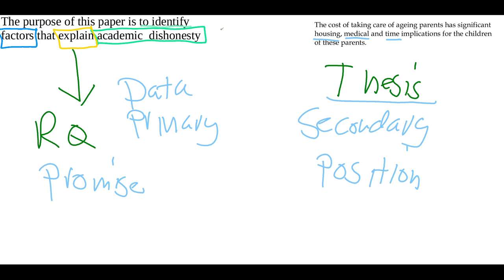It's often difficult to explain the difference because even with a purpose statement, you're sometimes not necessarily taking a position — you're making a promise. Just to make sure this is clear: if you look at the purpose statement, I'm not really taking any kind of a position like 'this is good, this is bad, this takes a lot of time.' Instead, I'm telling you this is what I'm going to do — I'm going to identify factors that explain academic dishonesty. The data is going to help to shape my position, and your position really comes out more at the end of the paper in your chapter five.